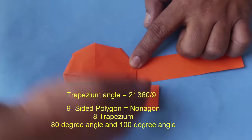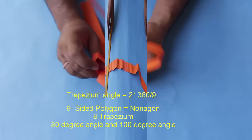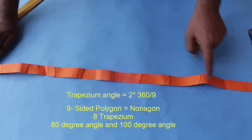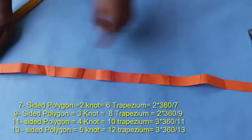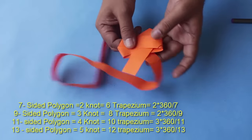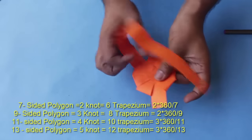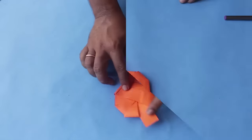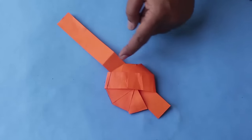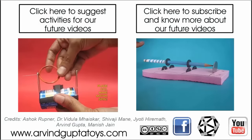In this manner, you can make any odd-sided polygon by tying the knots in a strip of paper. If you tie four knots, you get an eleven-sided polygon. I hope you enjoyed making the odd-sided polygons by tying a knot or even by making appropriate trapeziums with the exact angle. The knotty strip polygon. Thank you.